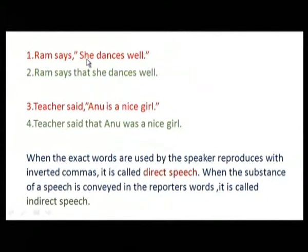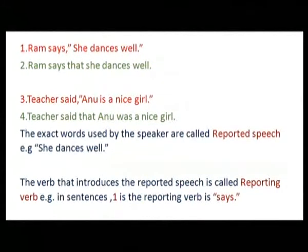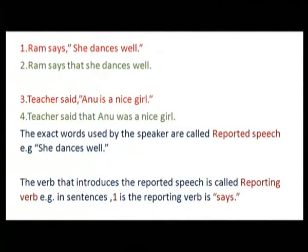When the substance of the speech is conveyed in the reporter's own words, it becomes indirect speech. The exact words used by the speaker, placed inside inverted commas, are called reported speech — for example, she dances well. The verb that introduces the reported speech is called the reporting verb — for example, 'says' in the first sentence and 'said' in the third sentence.